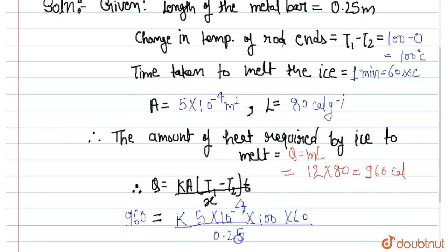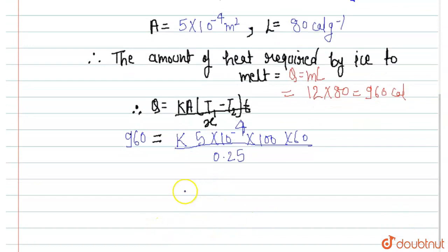So when we solve this, we got the value of k 30 calories per second per meter per degree Celsius. So here is the answer.